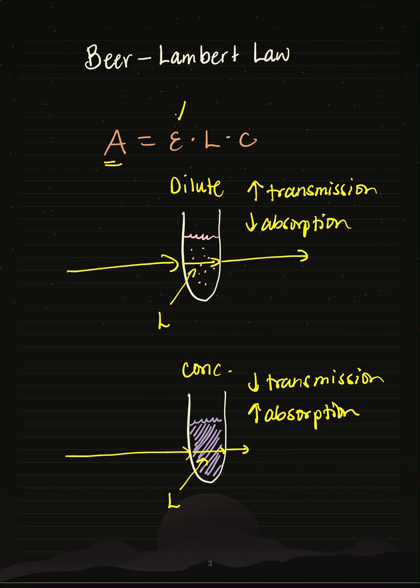Absorbance equals epsilon. This is going to be a constant, and that depends on the solution I'm using. And then we multiply that by our path length. Now, again, for this example, these path lengths are basically the same thing.